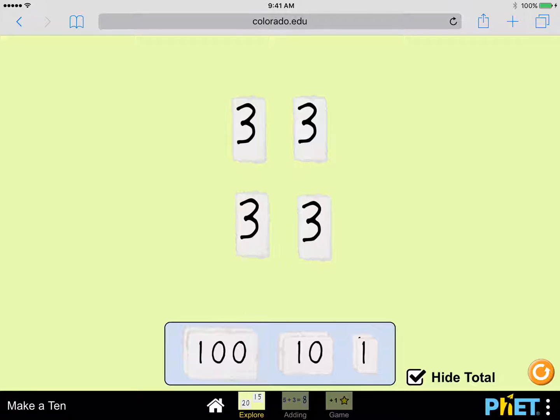4 threes is 12. Now if I take 1 of those 3s and break it into 3 ones and give each 3 its own 1, I can see that 12 is also 3 fours. 3 fours is also 12.